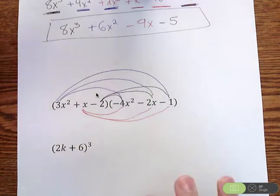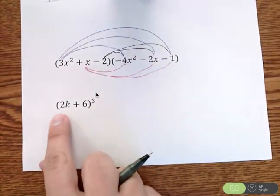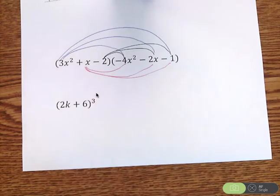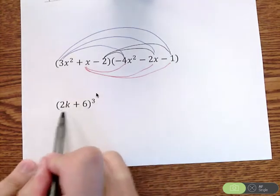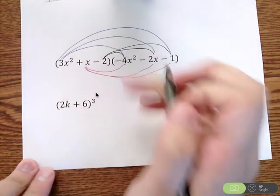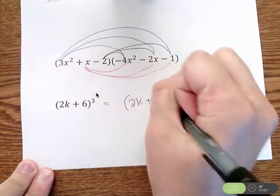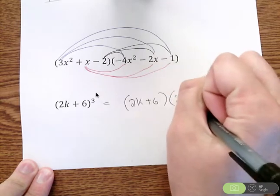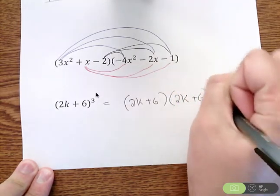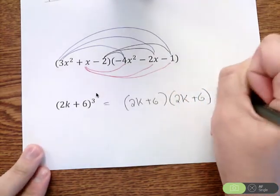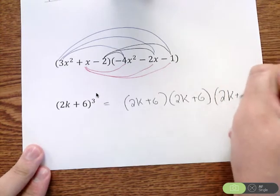One last example you might see is (2k + 6)³. Remember, anytime you see a parentheses to any power, this is the same thing as that parentheses written out three times. So we would have (2k + 6)(2k + 6)(2k + 6).